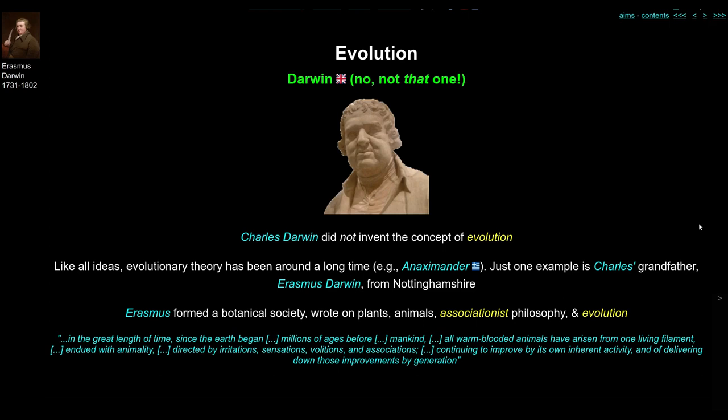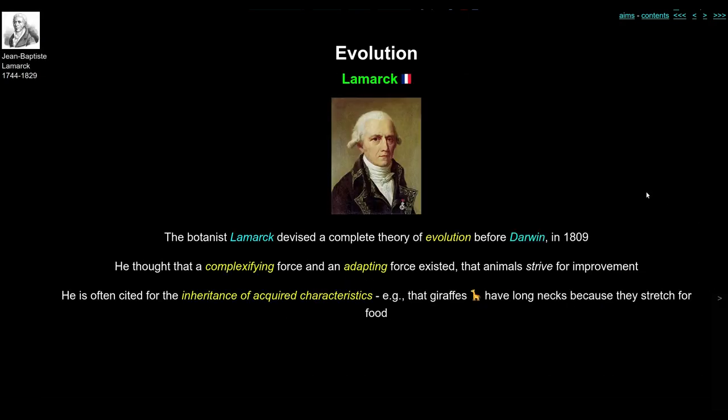This was 60 years before Darwin published his own book. And between Erasmus Darwin and Charles Darwin, there was a chap called Lamarck, who fleshed out perhaps the most fully developed theory of evolution before Darwin.